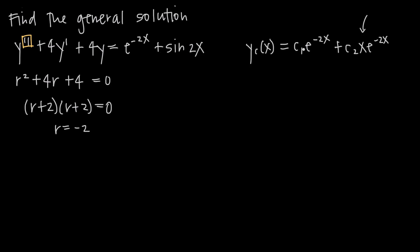Now we need a particular solution, because the general solution is the sum of the complementary and particular solutions. When finding the particular solution, we start paying attention to the right-hand side and make a guess. We generalize the values given. For the exponential term e^(-2x), we always keep the coefficient in the exponent and put a constant coefficient in front, so our guess starts with a·e^(-2x), where a is a placeholder constant we'll solve for later.